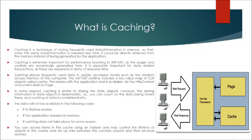Caching. What is caching? Caching is a technique of storing frequently used data or information in memory, so that when the same data or information is needed next time, it could be directly retrieved from the memory instead of being generated by the application.